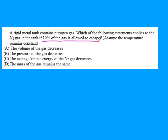When 10% of gas escapes from a rigid metal tank, the volume of the gas won't decrease because it expands to fill the container again. The pressure of the gas will decrease because there are fewer collisions. Temperature hasn't changed, so kinetic energy remains the same. The remaining gas has less mass than it started with—so the answer is B.